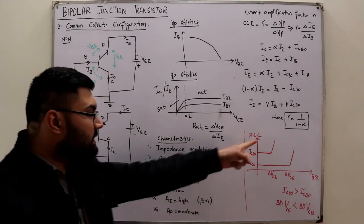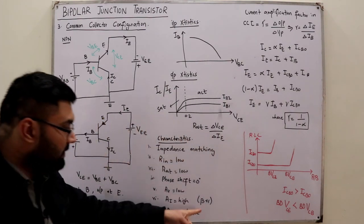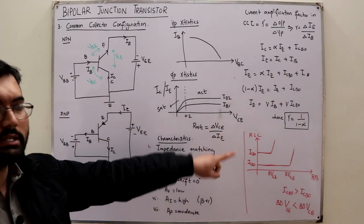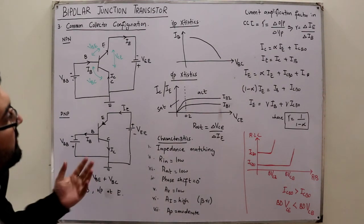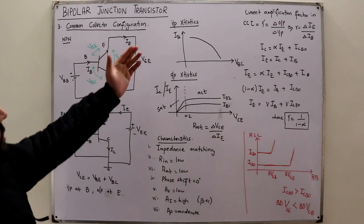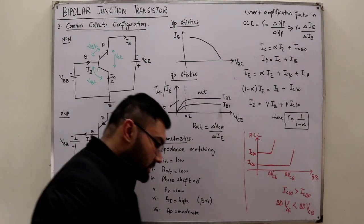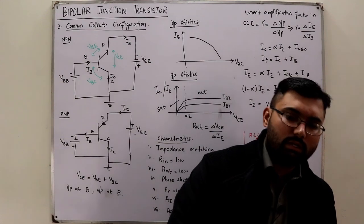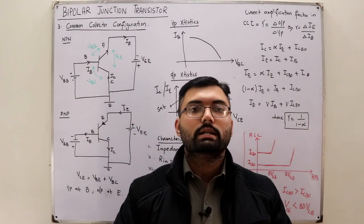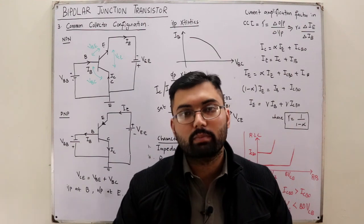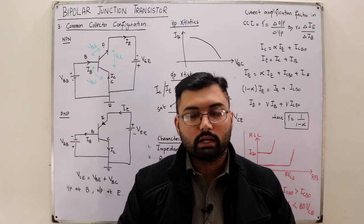We will see the relationship between beta plus one in the next video. That's all about the common collector configuration — the input characteristics, output characteristics, and the circuit design. That concludes all BJT configurations. In the next lecture, we'll summarize the key points and then move on to DC biasing of the BJT. Take care of yourself and everyone around you. Goodbye.